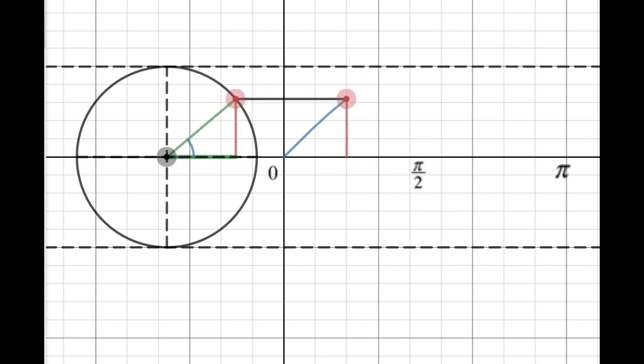Now if I place my terminal arm at pi over 4, I get the same value for sine as I did on my graph, 1 over root 2. If I continue rotating my terminal arm into the second quadrant at 3 pi over 4, you can see that I get the same value. So this little simulation should help you understand why two values will satisfy the equation.